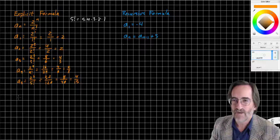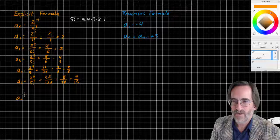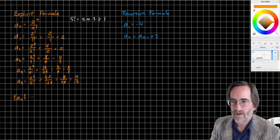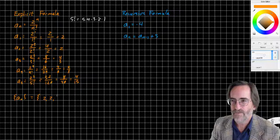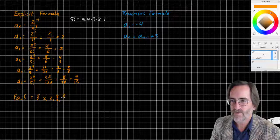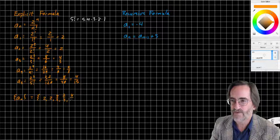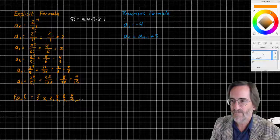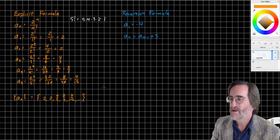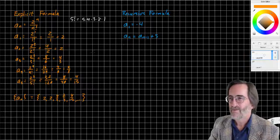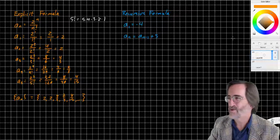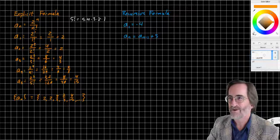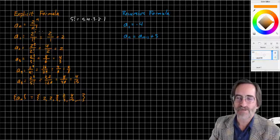So we would say A sub N equals 2, 2, 4 thirds, 2 thirds, 4 fifteenths, comma, comma, comma, chameleon. I dare you to tell me if you get that 1980s joke. All right, so that's an explicit formula.